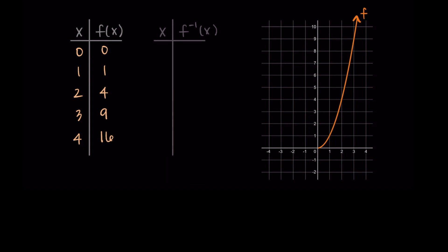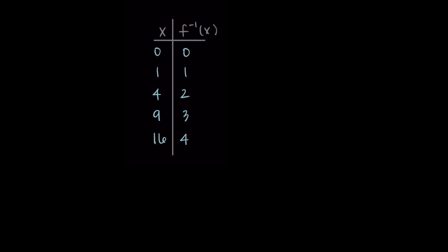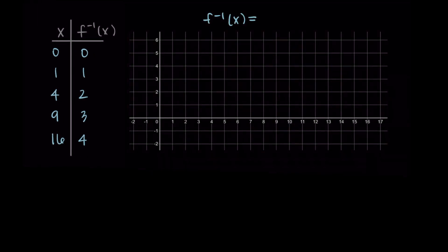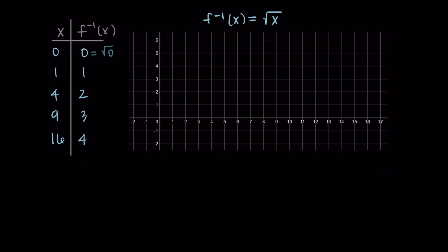When we take the inverse, this is going to swap the inputs and the outputs. My new inputs are zero, one, four, nine, and sixteen, and the new outputs are zero, one, two, three, and four. If the inverse function is the square root of x, then we should be taking all of these inputs and taking their square root. The square root of zero is zero, the square root of one is one, the square root of four is two, the square root of nine is three, and the square root of sixteen is four. So the square root is exactly what undoes that squared that we started with.